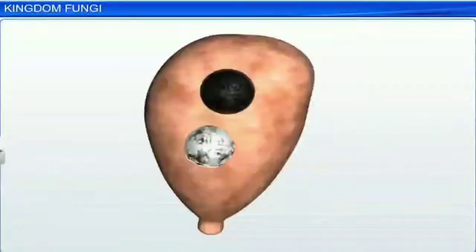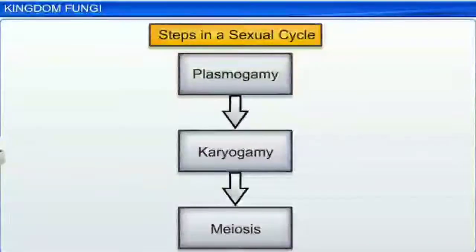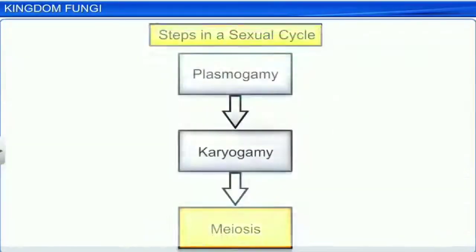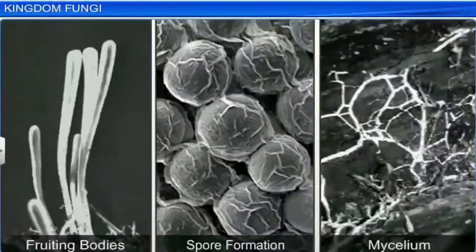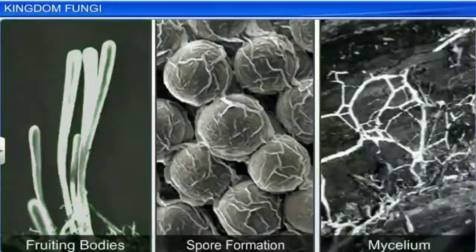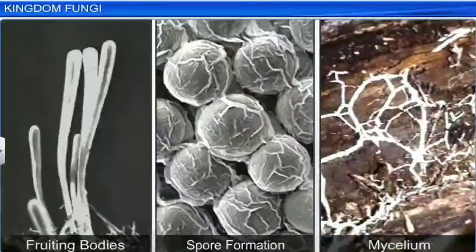Later, the parental nuclei fuse to make a diploid cell. The third stage involves reduction division, that is Meiosis, to form haploid spores. Meiosis occurs in the fruiting bodies of fungi. Together, the fruiting bodies, the mode of spore formation, and the morphology of the mycelium form the basis of the division of the kingdom Fungi into various classes.